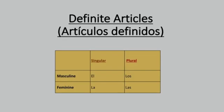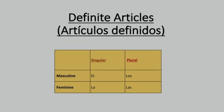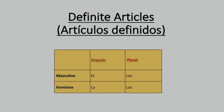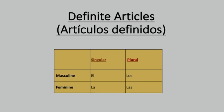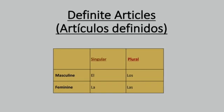Definite articles. In English, we have only one definite article: 'the.' But in Spanish, you have to choose between four definite articles: El, La, Los, and Las.